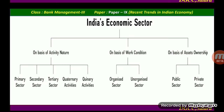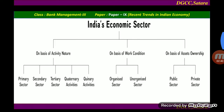On the basis of activity or nature, we can classify economic sectors as primary, secondary, tertiary, quaternary, and quinary sectors. On the basis of work condition, we can classify sectors as organized and unorganized sectors. On the basis of asset ownership, sectors are classified as public sector, where the government owns the assets, and private sector, where private individuals own the assets or business enterprises.